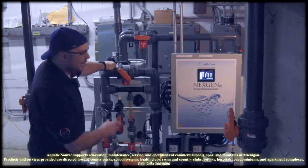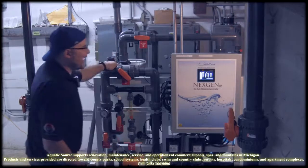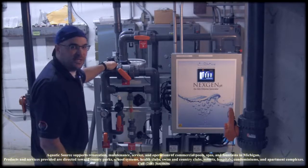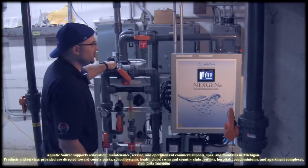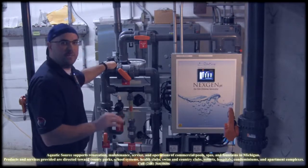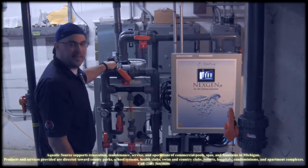This system will make the equivalent of 20 gallons of 12% liquid bleach in a 24-hour period, which for most high school competition pools in southeast Michigan is a really, really good balance. 20 gallons of chlorine is a lot of bleach.